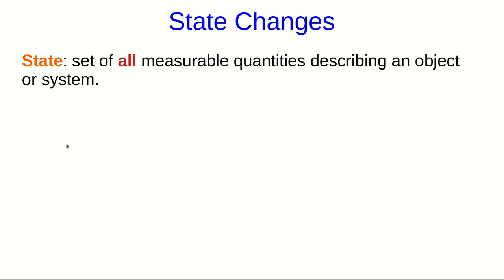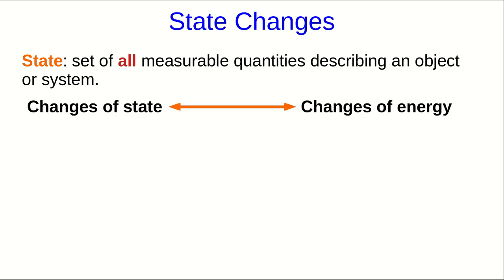Now that we've spent some time on kinetic energy and gravitational potential energy, it's time to generalize our idea of energy somewhat, so that we can move on to other forms of energy. So remember that energy is all about change, and so we need some language to talk about change. The state of an object or system is the set of all measurable quantities that can describe it. And this will be useful for talking about changes. So all changes of energy are associated with changes of state.